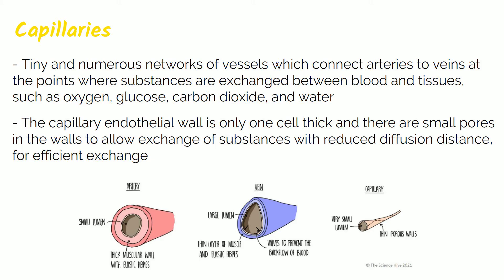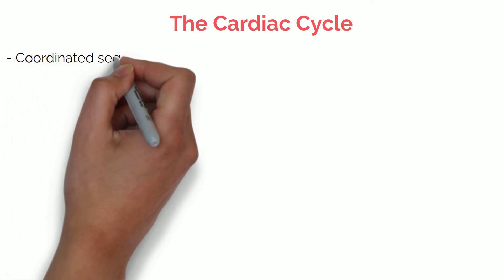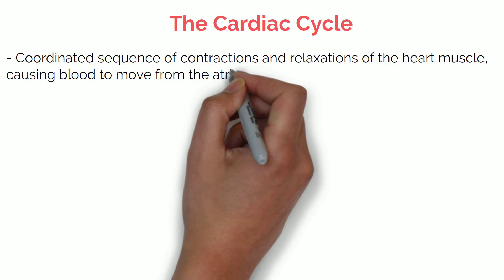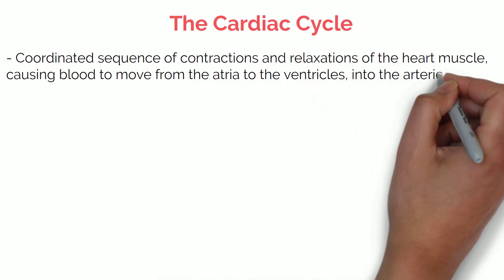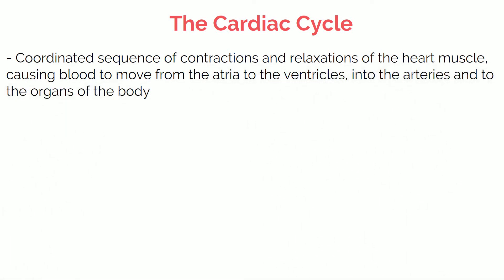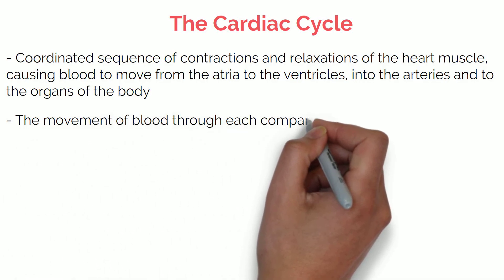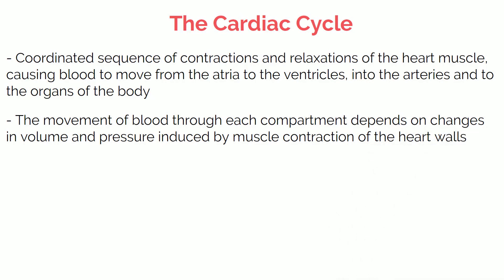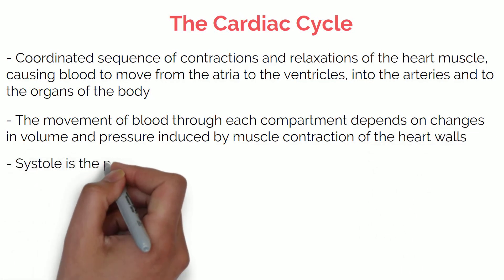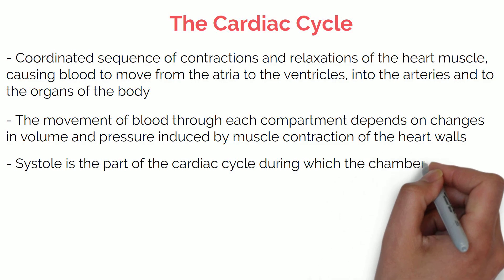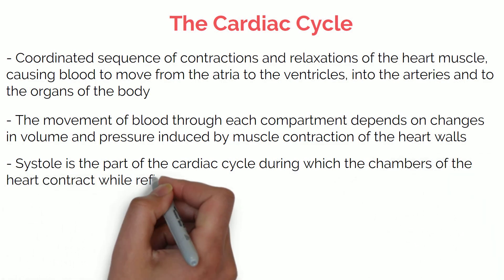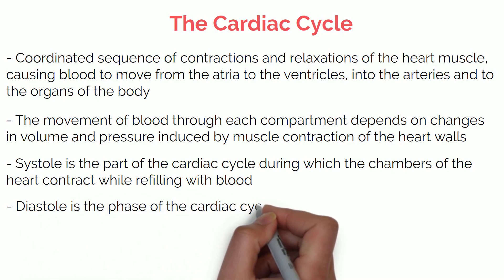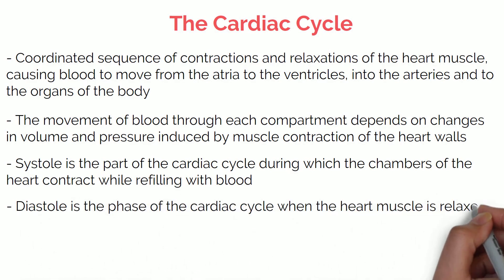The cardiac cycle refers to the coordinated sequence of contractions and relaxations of the heart muscle, causing blood to move from the atria to the ventricles, into the arteries and to the organs of the body. The movement of blood through each compartment depends on changes in volume and pressure induced by the muscle contraction of the heart walls. Systole is the part of the cardiac cycle during which the chambers of the heart contract, while diastole is the phase when the heart muscle is relaxed and the chambers are filling with blood.